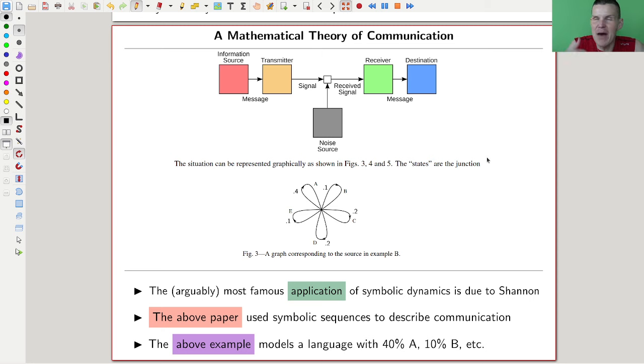If you read this paper, this picture is stolen from that paper. Essentially languages are modeled in kind of the same type of system. Here you have a language where you have a probability of 40% that you write a letter A, and 10% to write a letter B, and then whatever, something else, and Shannon studies those types of things, symbols, and then applies methods from symbolic dynamics.